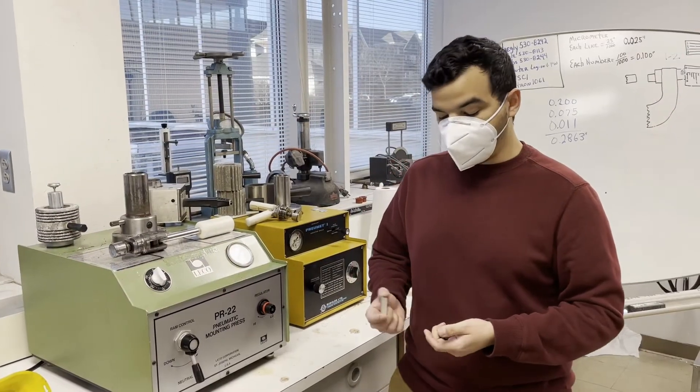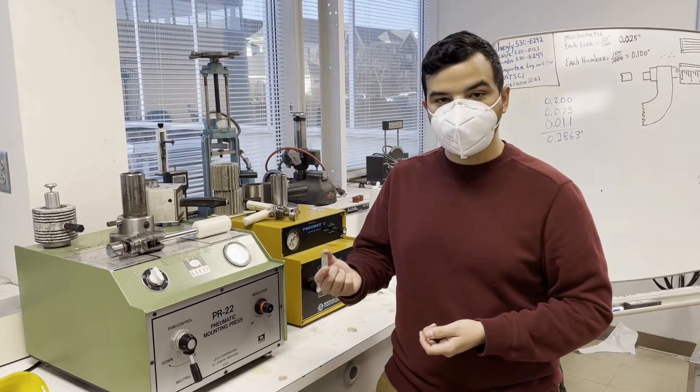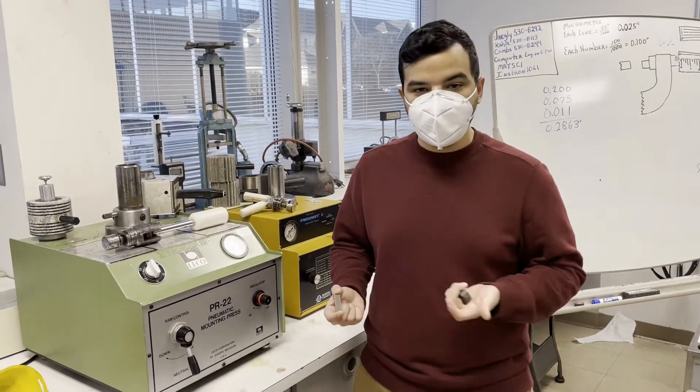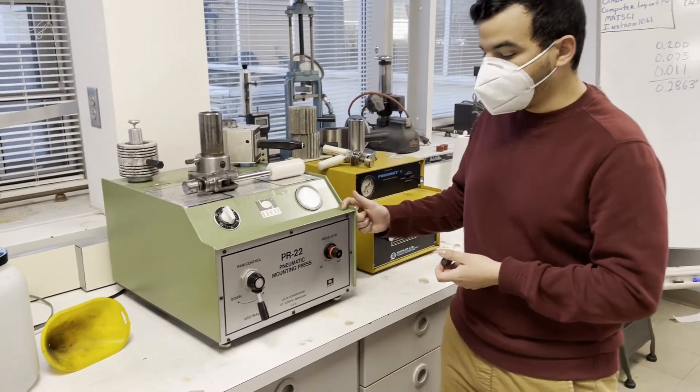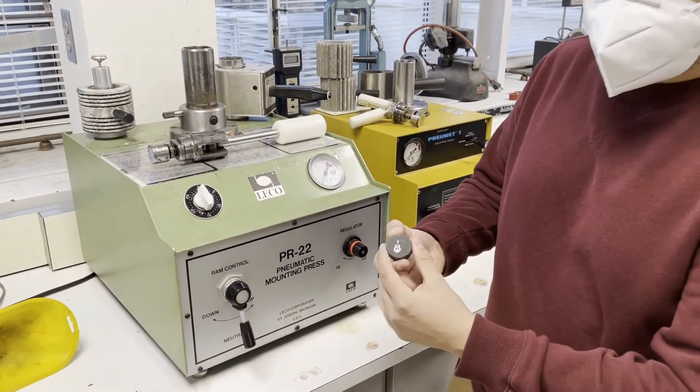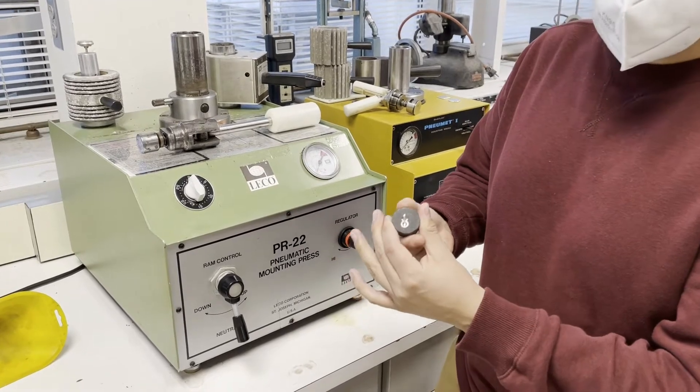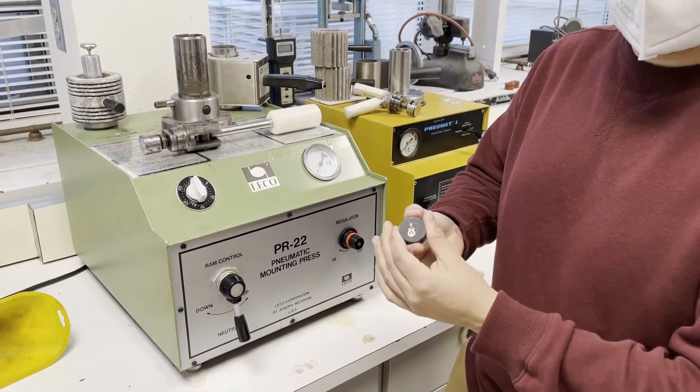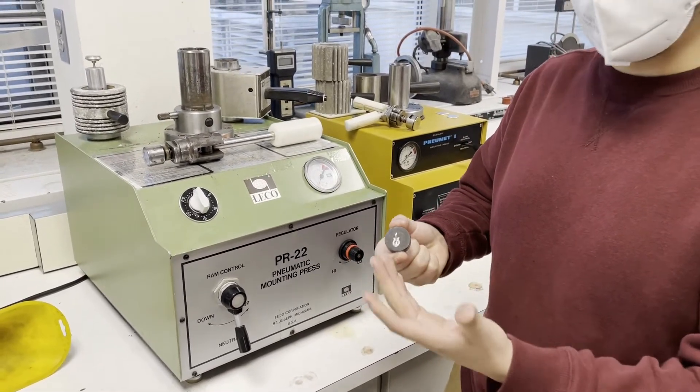After our test coupons are welded and cut, we're going to be mounting them using our pneumatic mounting press. We're going to end up with a Bakelite coupon which is going to be easier to hold and polish for further examination under the microscope.